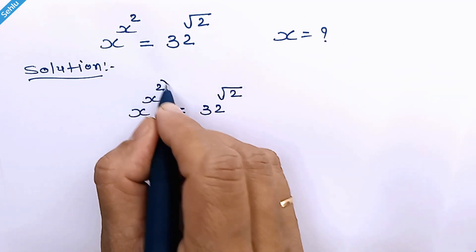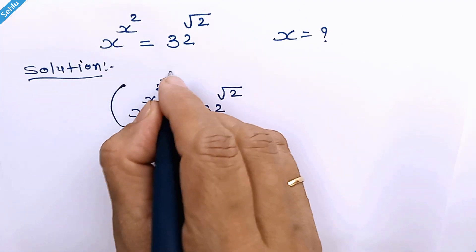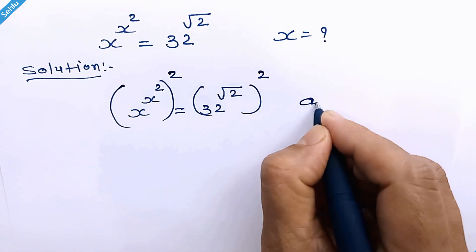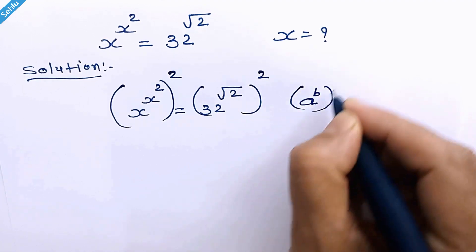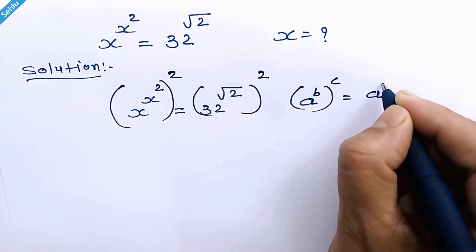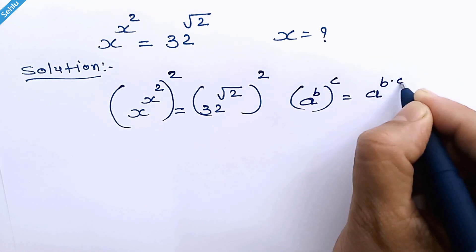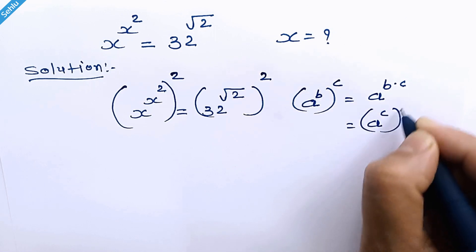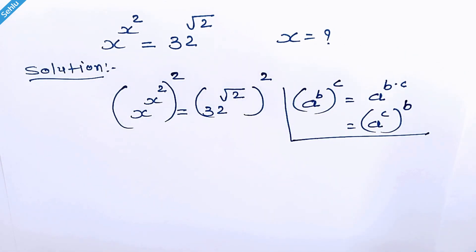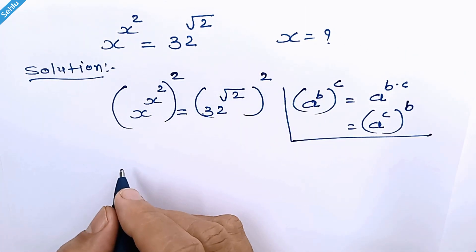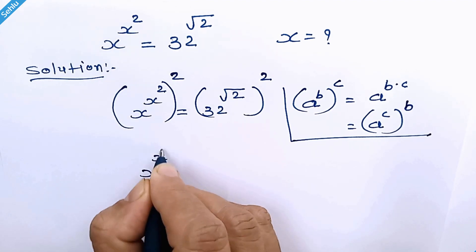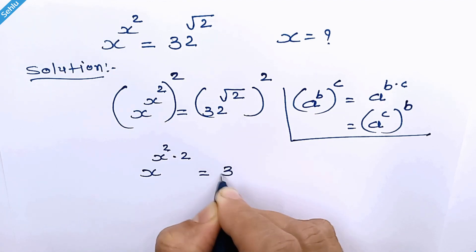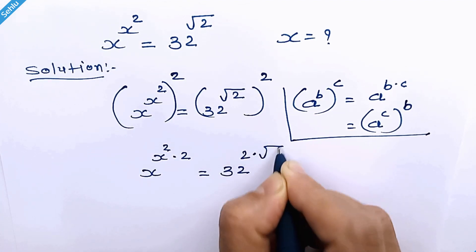In the first step, we will square both sides. Recall the rule where a raised to b, whole raised to c, equals a raised to b times c. Applying this rule to both sides gives x raised to x square times 2, equal to 32 raised to 2 times square root of 2.